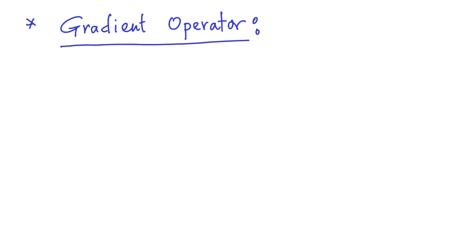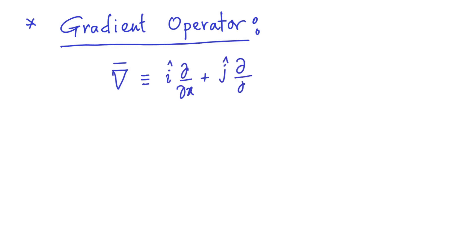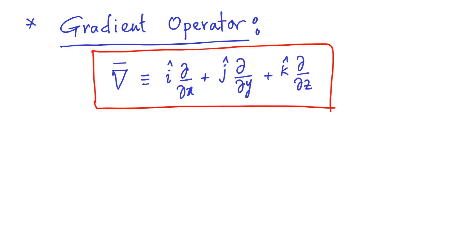Now we are going to introduce a vector operator involving partial derivatives, which is known as the gradient operator, sometimes also called the nabla operator. The gradient operator is defined as i-hat times del/del x plus j-hat times del/del y plus k-hat times del/del z.